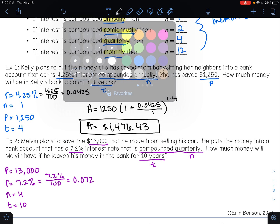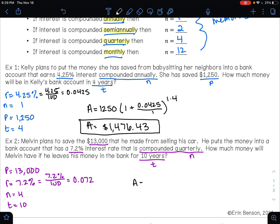He had $13,000. 1 plus 0.072 divided by 4. And that's raised to the 4 times 10 power. So we're going to go on over to Desmos. We are going to enter this in and we are going to see how much money Melvin has in 10 years.